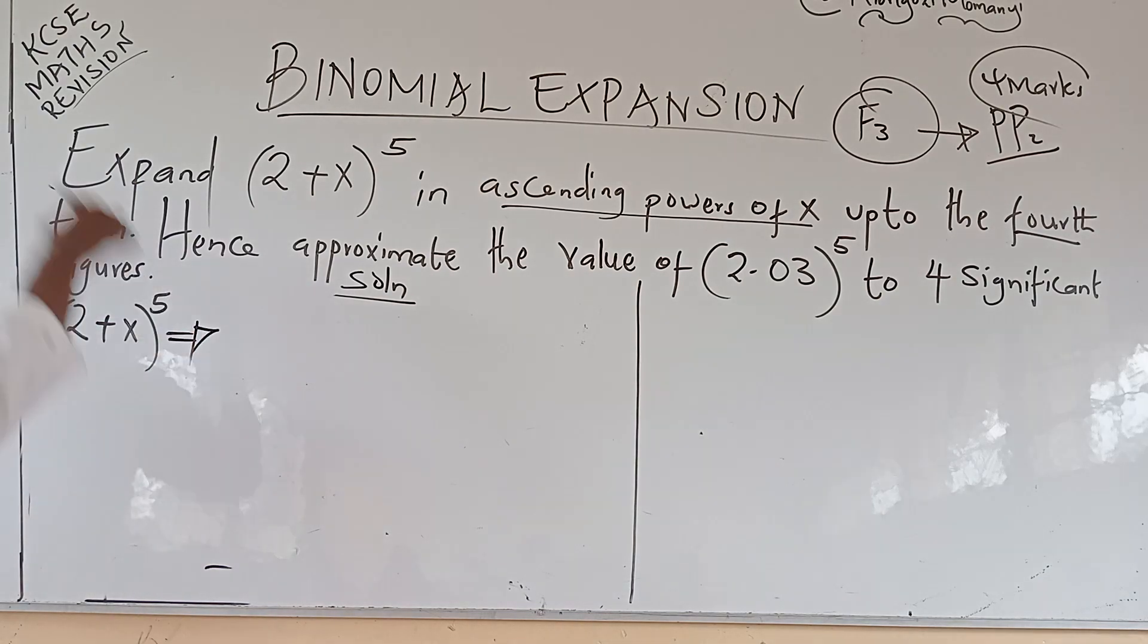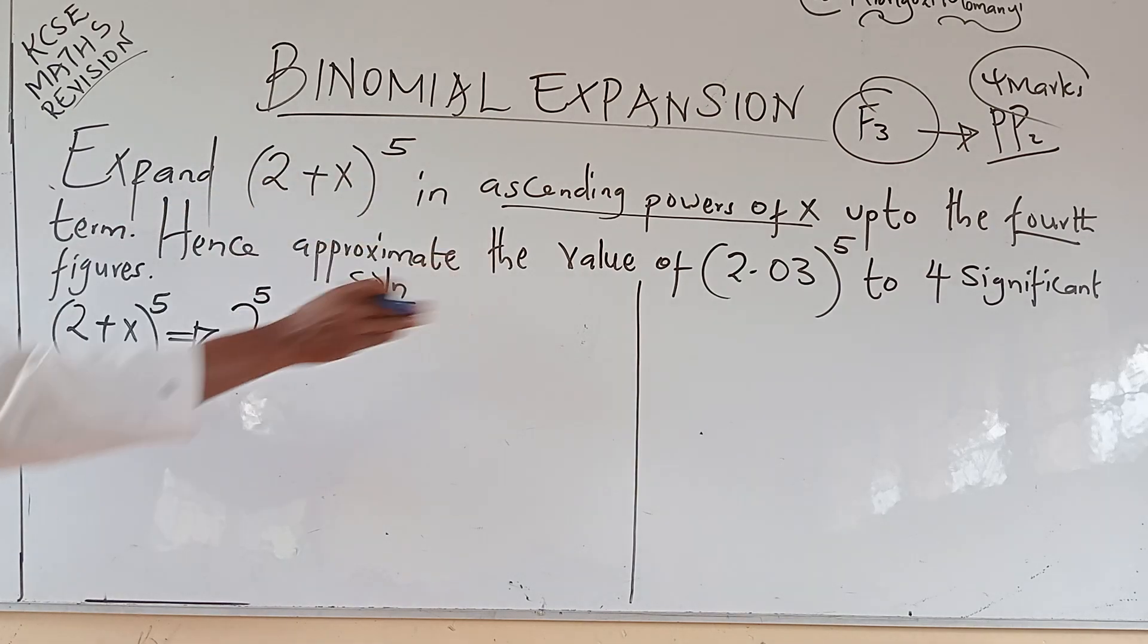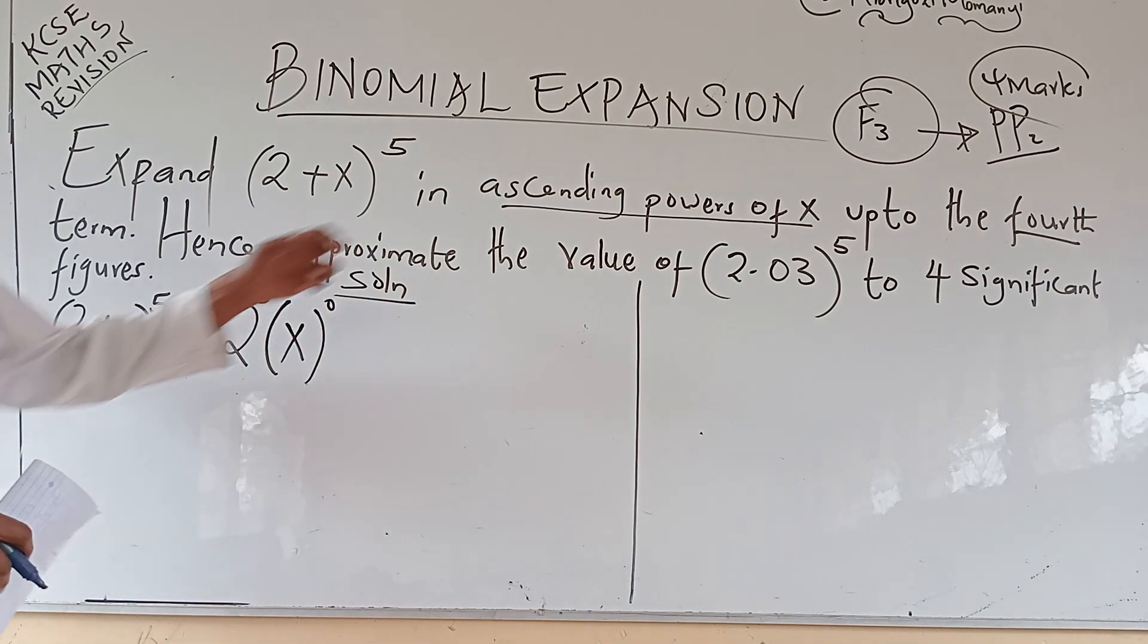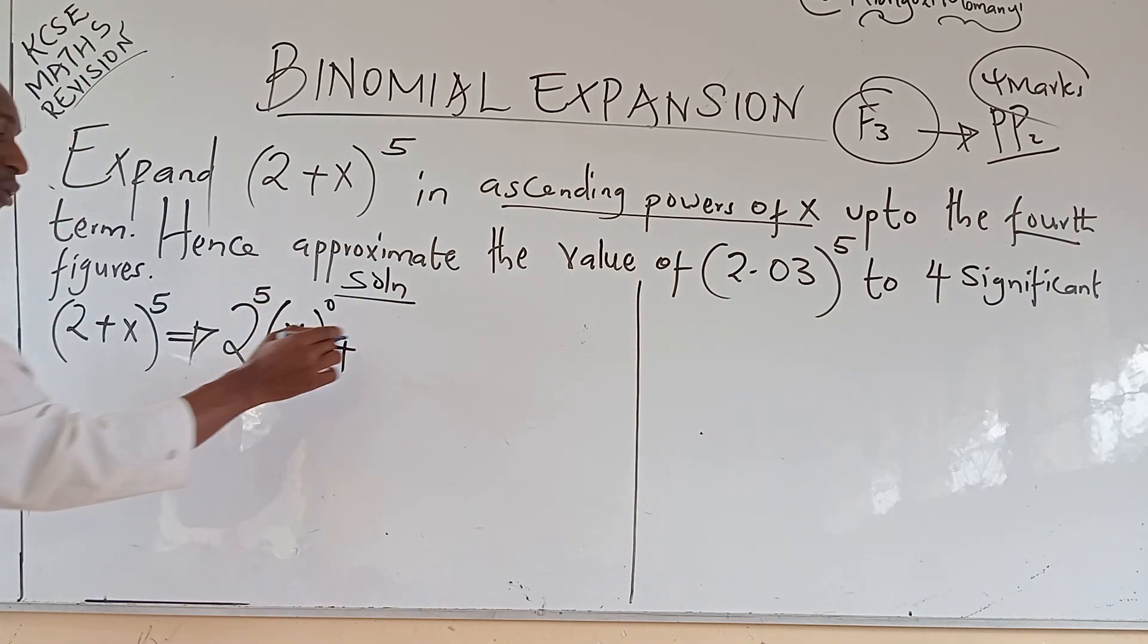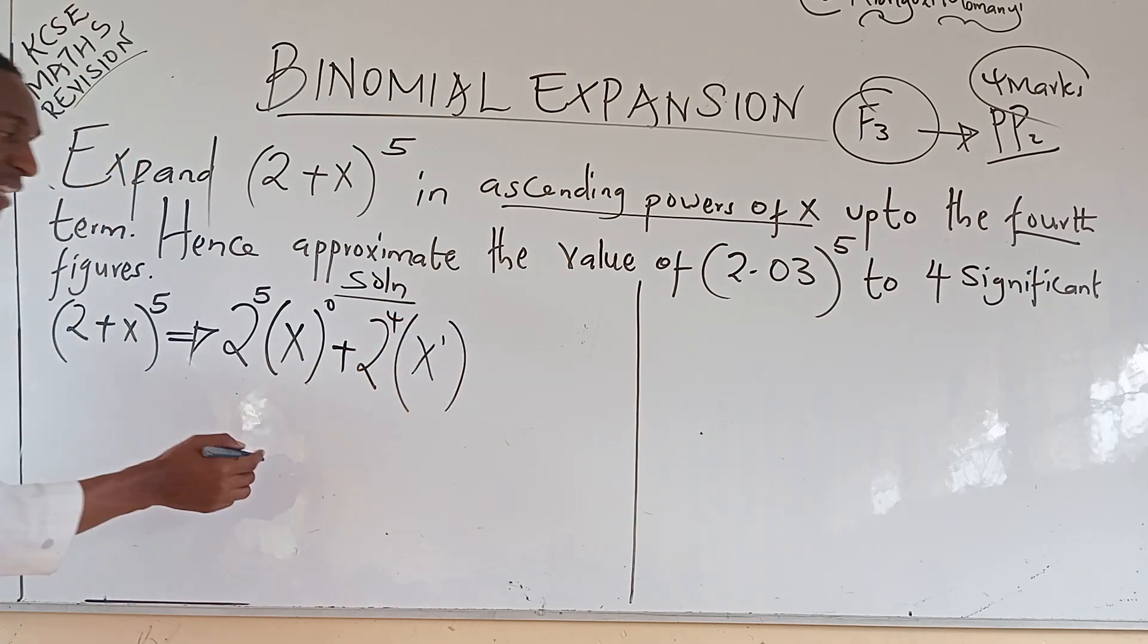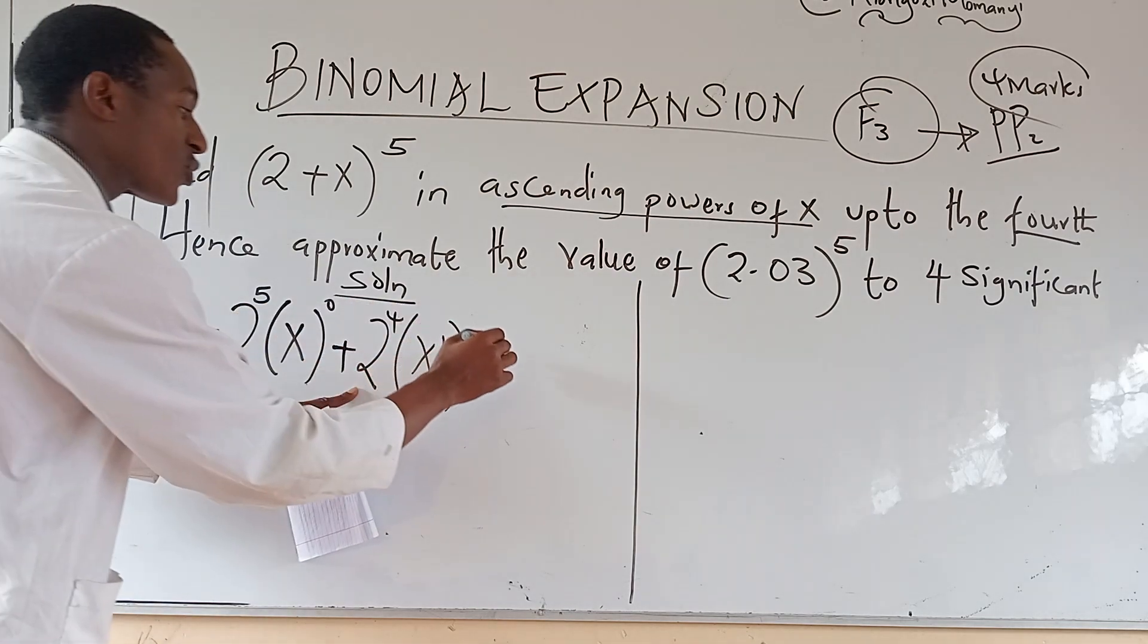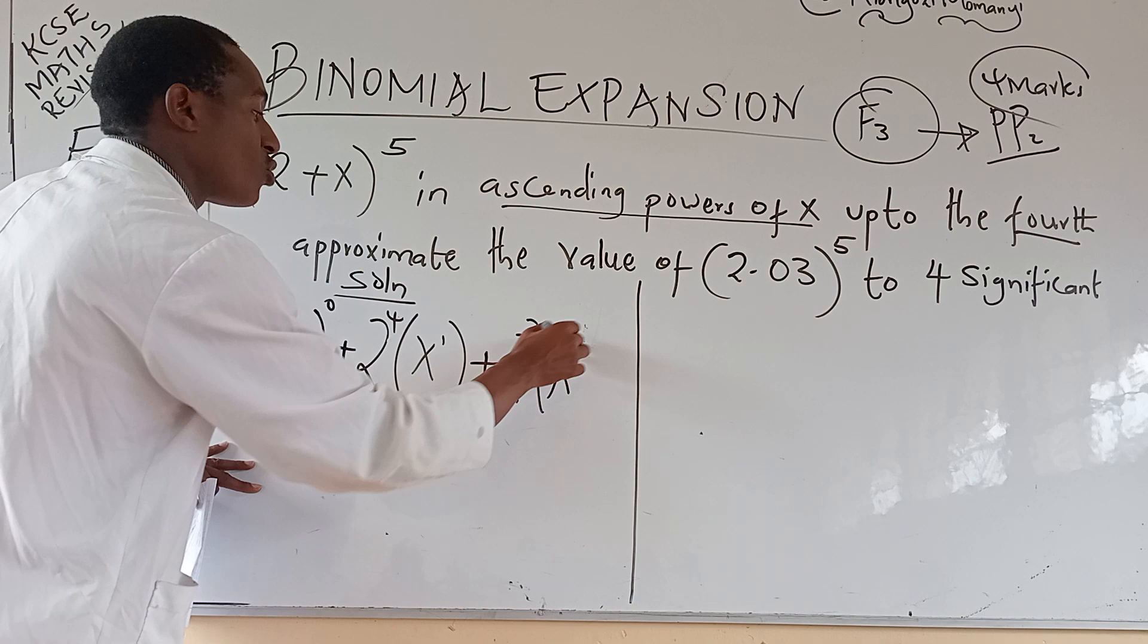Let us first of all expand that binomial. The 2 here, because the first value will begin from the power of 5. So the first value descends, goes downwards from 5 all the way to 0. But the second value x begins from 0 and goes upwards. And that's why we are calling it ascending powers of x. From 0 to 1. So 2 goes to power 4, then x goes to power 1. Then plus 2 goes to power 3.